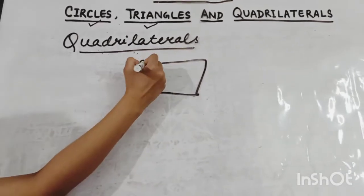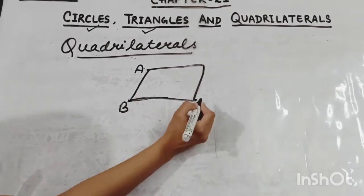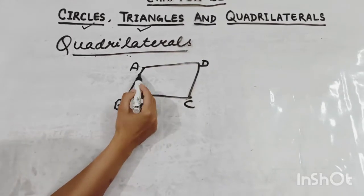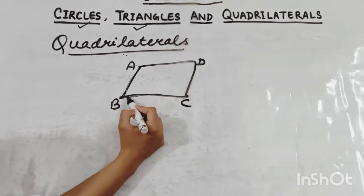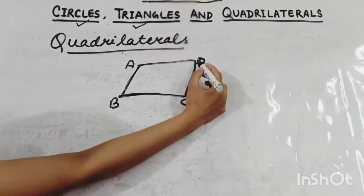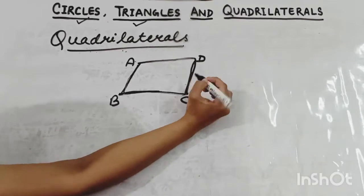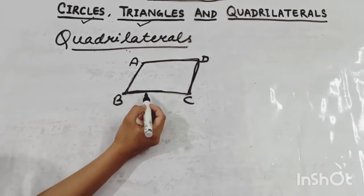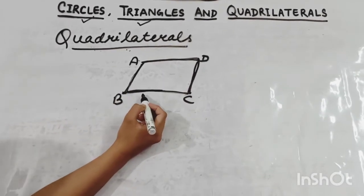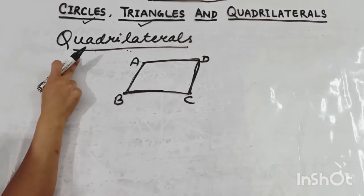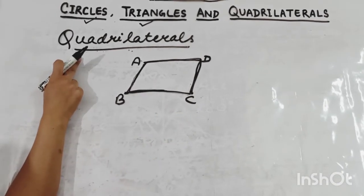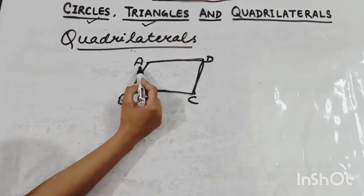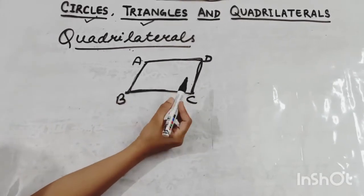I name it as A, B, C, D. There are four line segments: AB is a line segment, BC is a line segment, CD is a line segment, and AD is also a line segment. The figure formed by four line segments — that is your quadrilateral. We name it using the capital letters A, B, C, D.